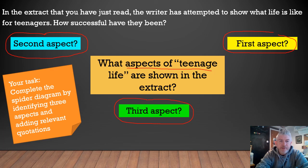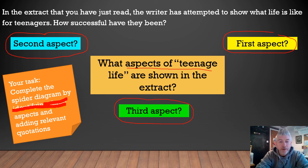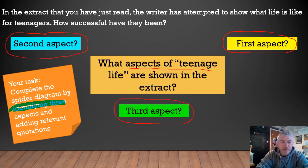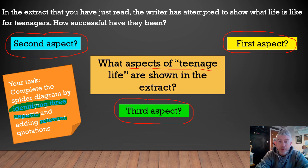Once you've done that and identified the three aspects, for each of those aspects collect as many quotes as you can — relevant quotations. And that's kind of exactly what we did back in Lesson 1 earlier this week.